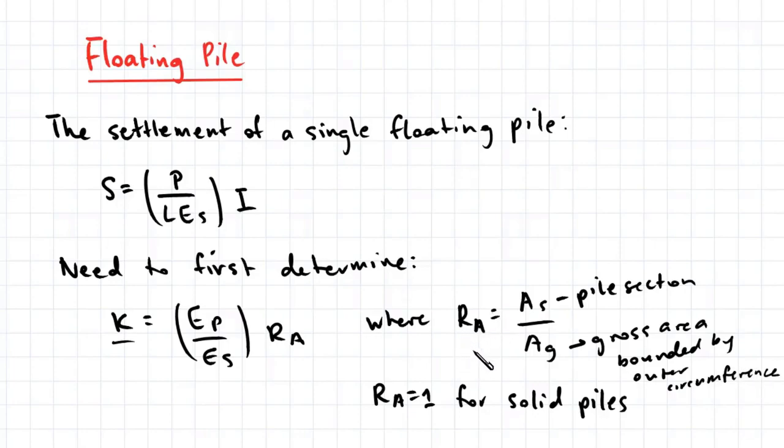This ratio can account for hollow cross sections, and RA will be equal to 1 for solid piles.